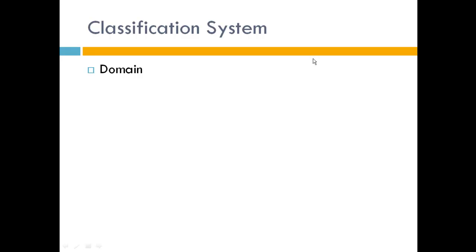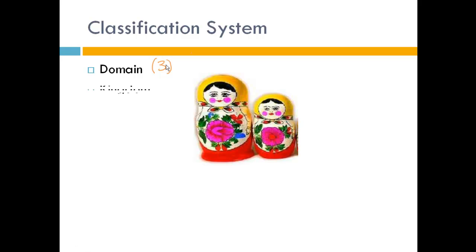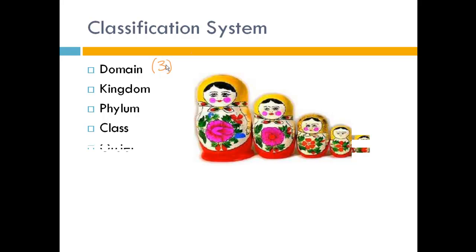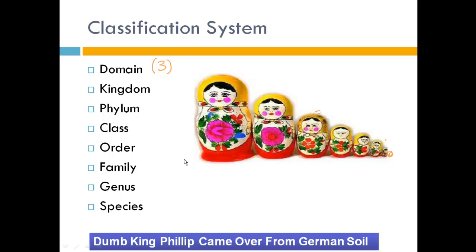All living things belong to the largest level of classification called the domain — we'll use the analogy of a Russian nesting doll. There are three domains for all living things. Within each domain we have several kingdoms, within each kingdom several phylums, within every phylum several classes, within every class an order, within every order lots of families, within every family lots of genuses, and finally species. A mnemonic device to remember this is: Dumb King Philip Came Over From German Soil — Domain, Kingdom, Phylum, Class, Order, Family, Genus, Species.